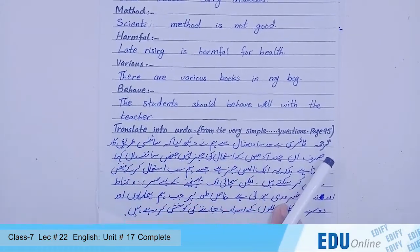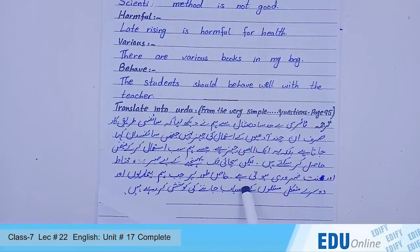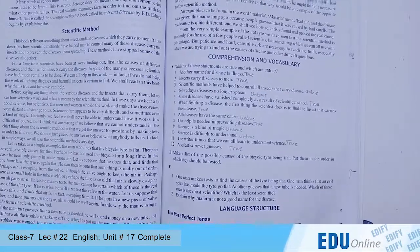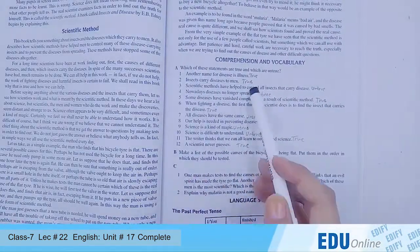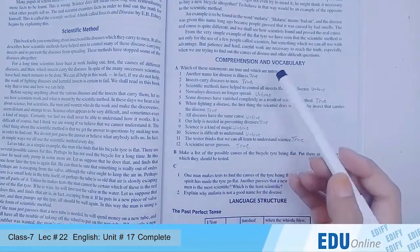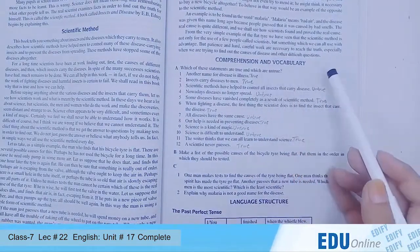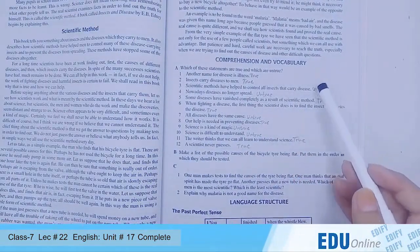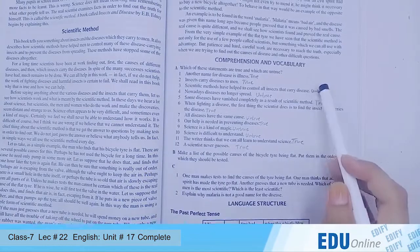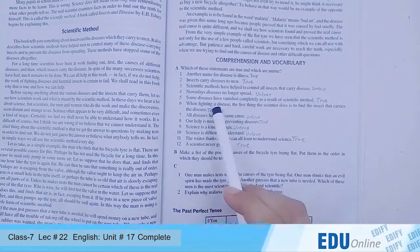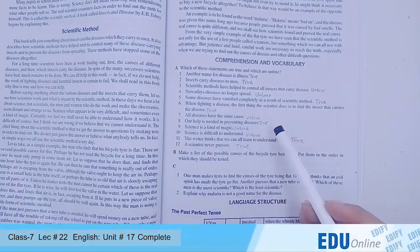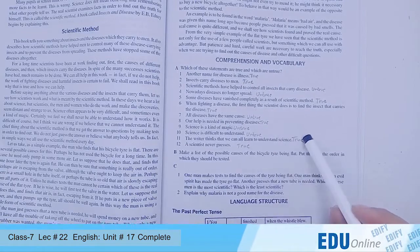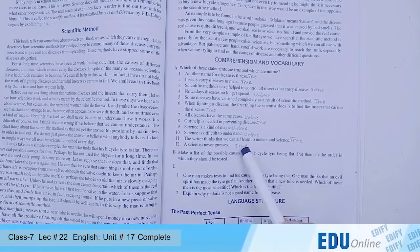This is a paragraph of translation into Urdu, you will see it. Now the book work is on page number 95. Part A: answers — true, second untrue, third untrue, true, 7 untrue, 8, 9 untrue, 10 untrue, 11, 12 true.